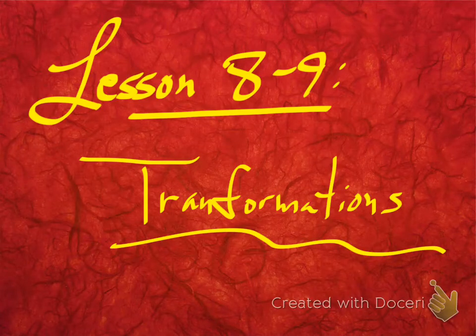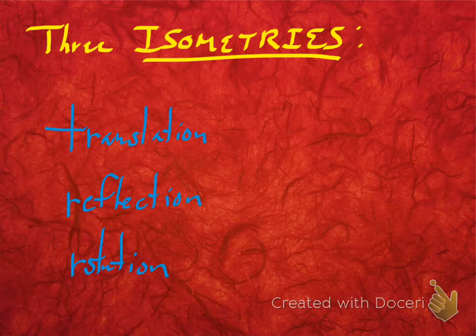Welcome, class. This is lesson 8-9 on transformations. We've talked about transformations a little bit in the past — it's basically taking things and moving them around the plane. So let's talk about the three types of isometries.